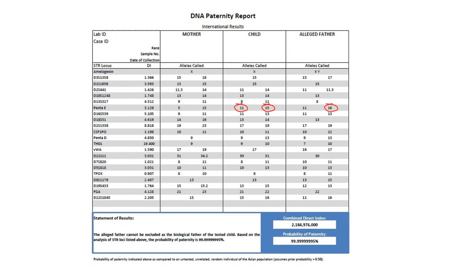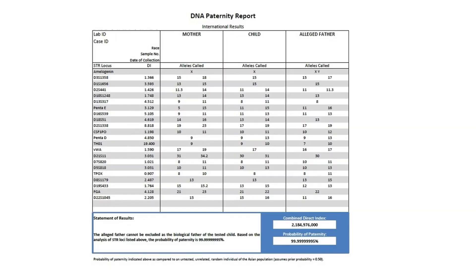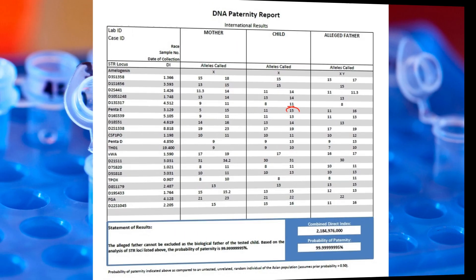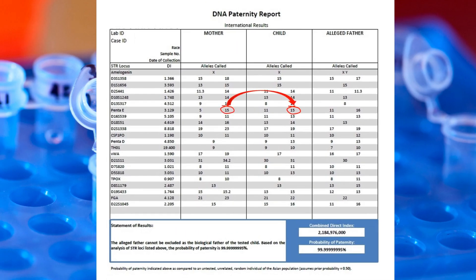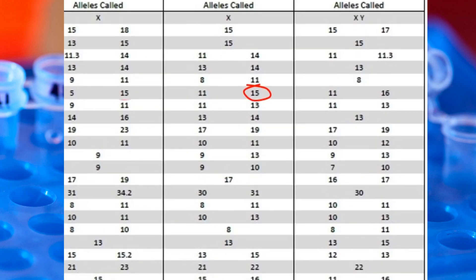Our lab tests at least 20 different DNA locations listed in the STR locus column and then compares the data with the same locations for other tested parties. A person's own piece of DNA found at a particular locus in a paternity test is called an allele, and may also be referred to as a genetic marker. Each person has two alleles at each locus. The number associated with each allele represents the length of the DNA segment, and often they are not the same size. If only one number is given at a locus, then both alleles at that locus are the same size.